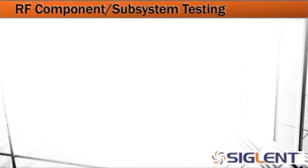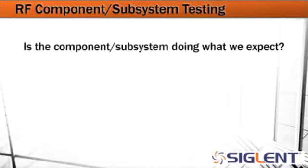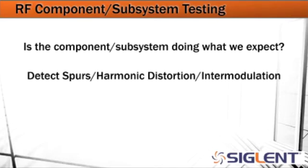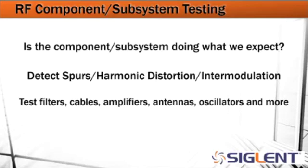The next application space is RF component and subsystem testing. Is the component or subsystem doing what we expect? If we expect an amplifier to output 10 dBm, is it actually going to do that with the given input, and over a particular frequency range? Is our filter working correctly? We can detect spurs, harmonic distortion, and intermodulation because the spectrum analyzer allows us to visually see exactly what's happening with respect to frequency. We can test filters, cables, amplifiers, antennas, crystal oscillators, and more.